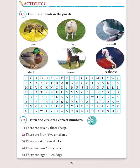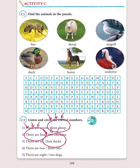Track 62, Unit 10, Activity C, C2. Listen and circle the correct numbers. 1. There are three sheep. 2. There are four chickens. 3. There are four ducks. 4. There are two cats. 5. There are two dogs.